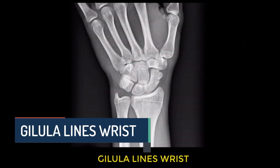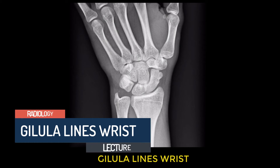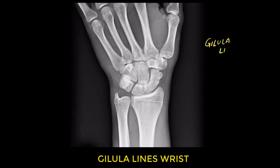Welcome to another lecture looking at Gilula lines of the wrist. What are these Gilula lines and why are they important? This is very important to understand, and it's more important for people who are in orthopedics — orthopedic registrars and those dealing with orthopedic cases. There are three Gilula arcs or Gilula lines.